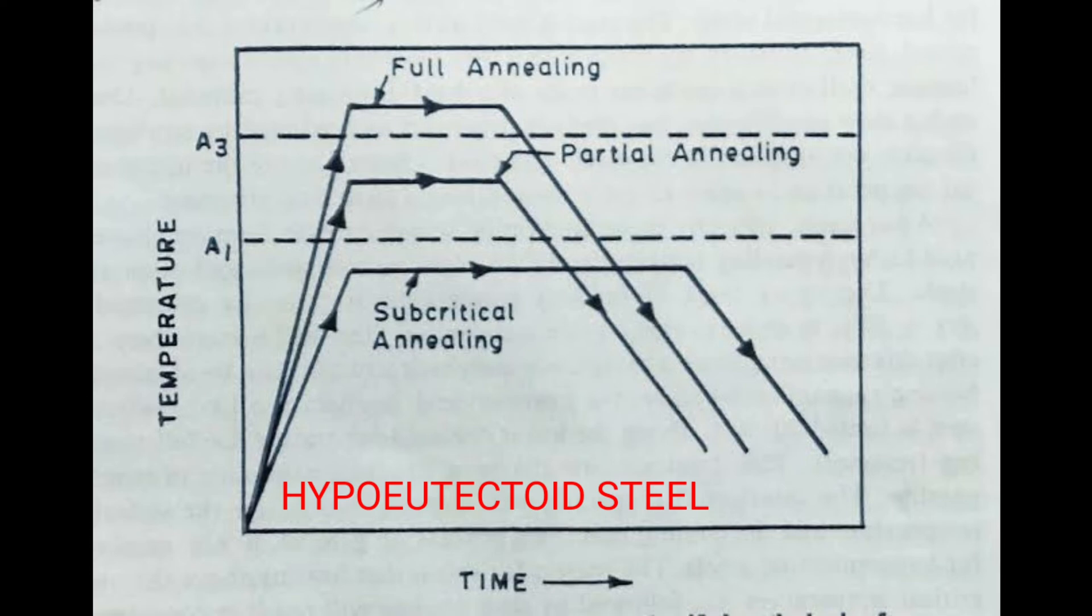For example in steels, as you see in the figure, heating above the critical temperatures, AC3 for hypoeutectoid steel, is known as full annealing. Heating between the AC3 and AC1 is known as partial annealing while heating below AC1 is known as subcritical annealing.